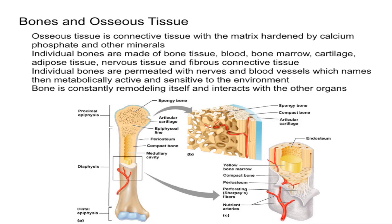One major thing to clear up is the distinction between bone tissue, osseous tissue, and bones. Bone tissue is different from bones themselves. Bones are organs made up of bone tissue as well as all of the marrow, blood vessels, and nerves. Bone tissue specifically refers to the matrix that forms the hard parts of the organ.